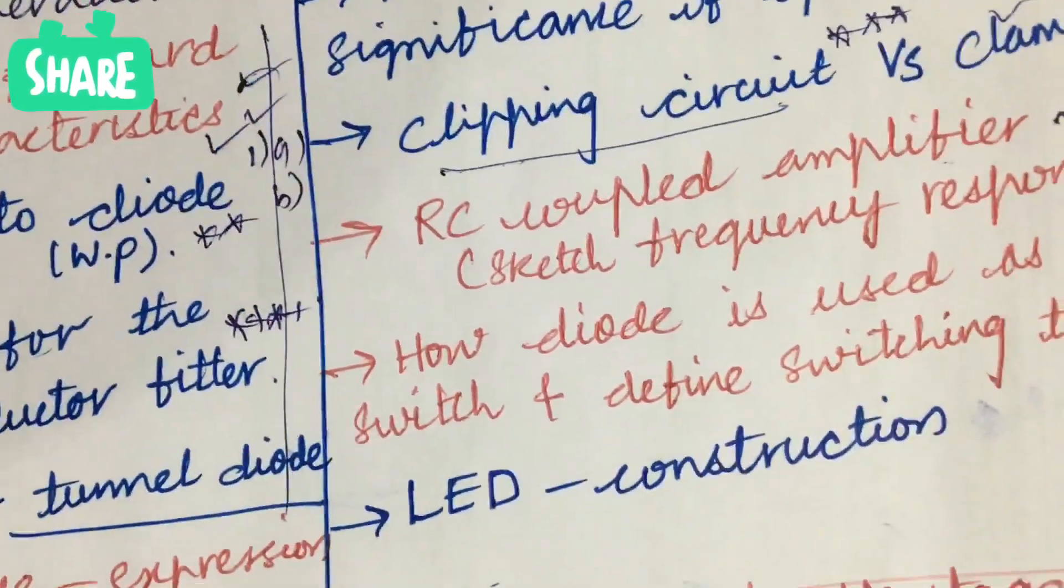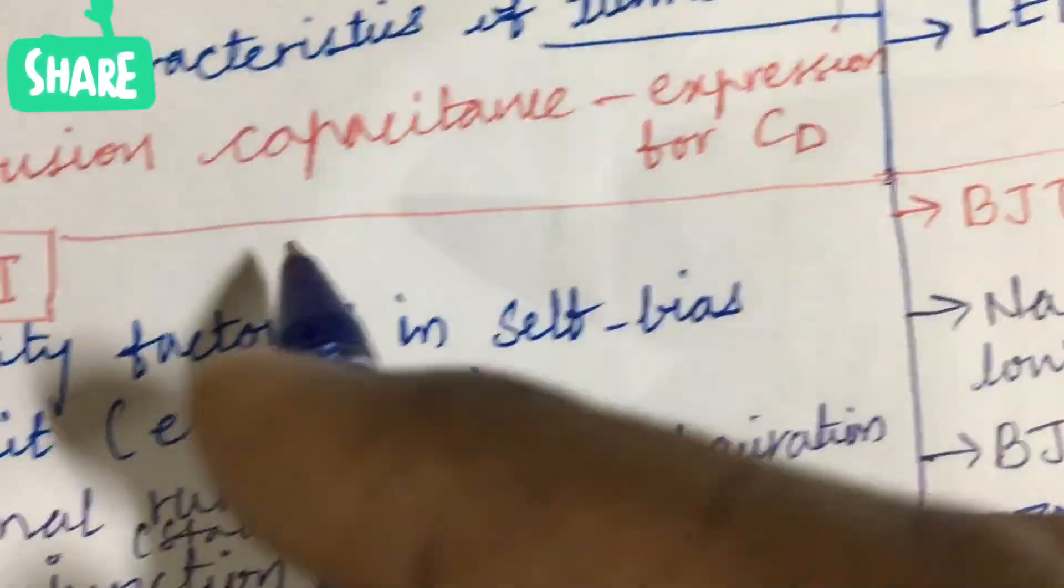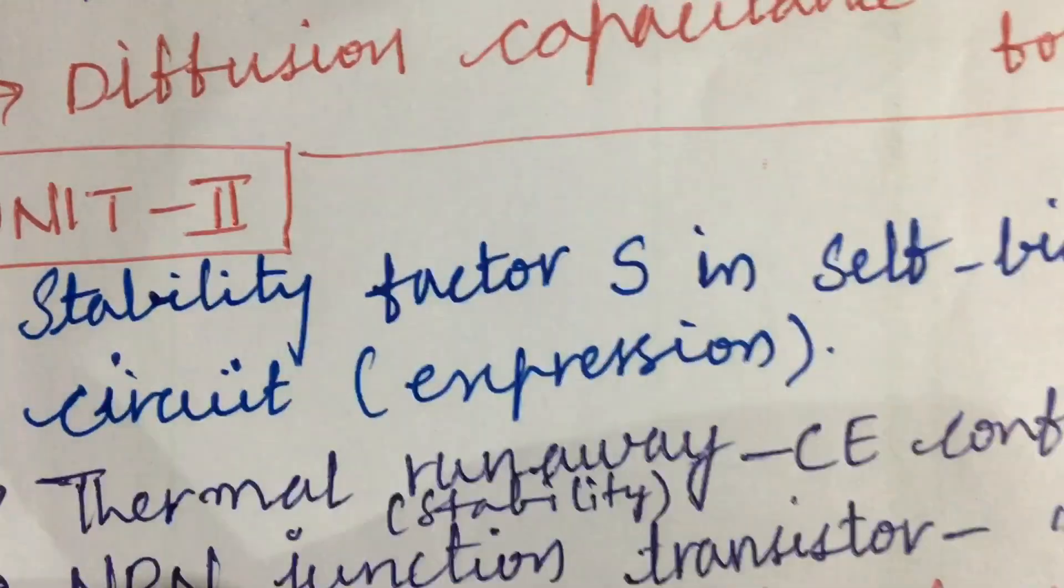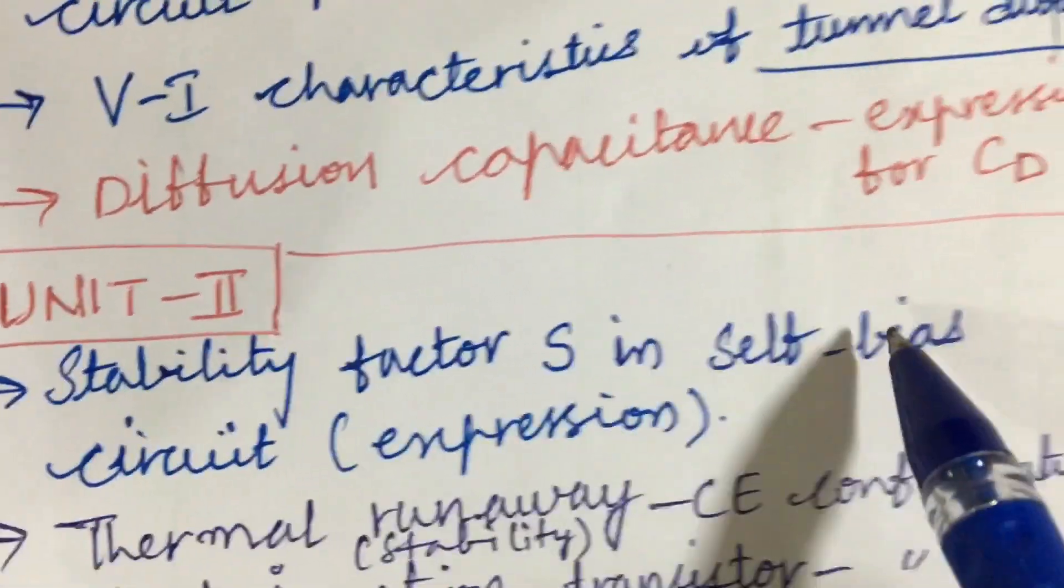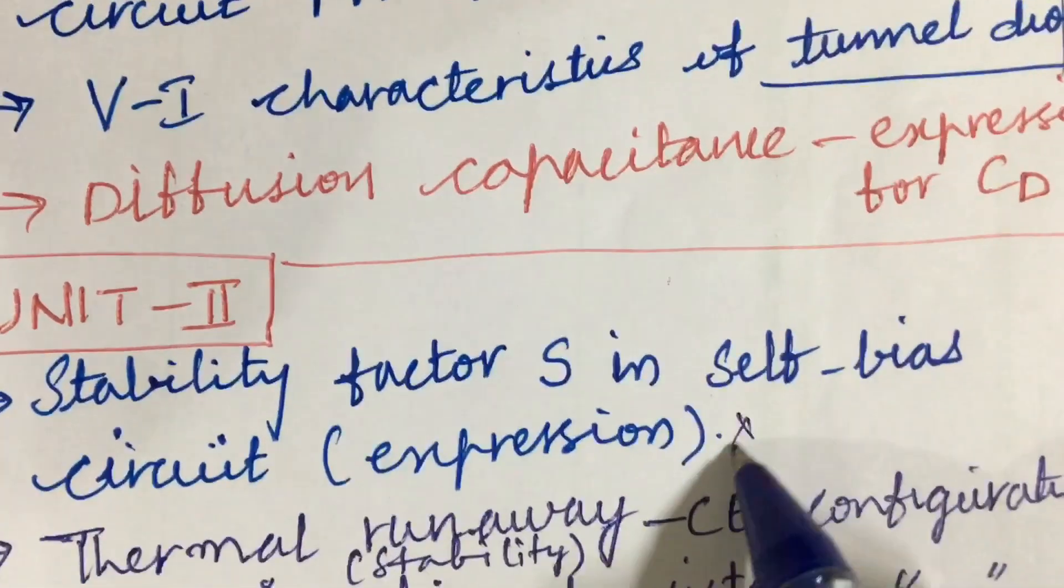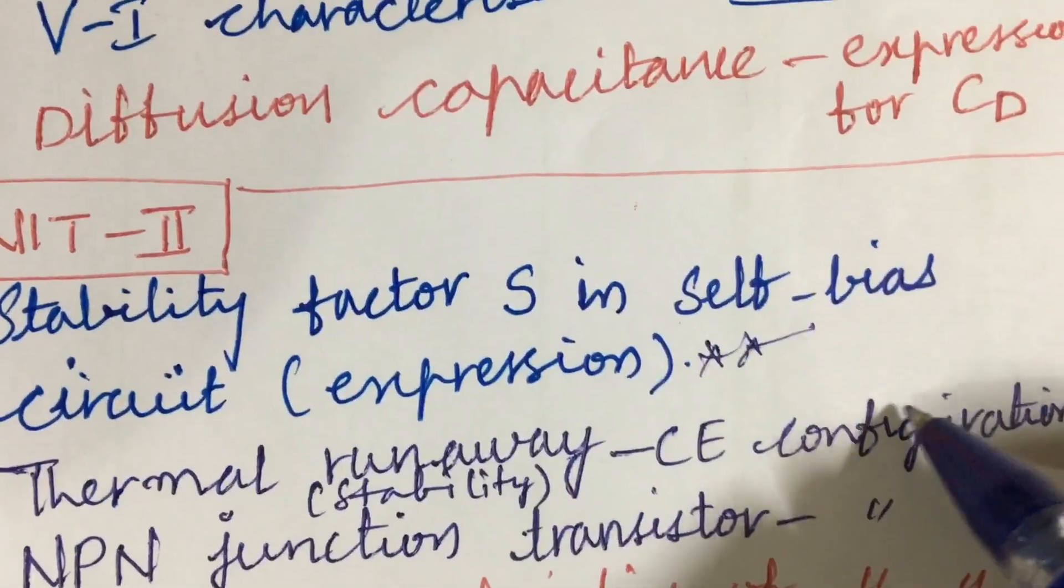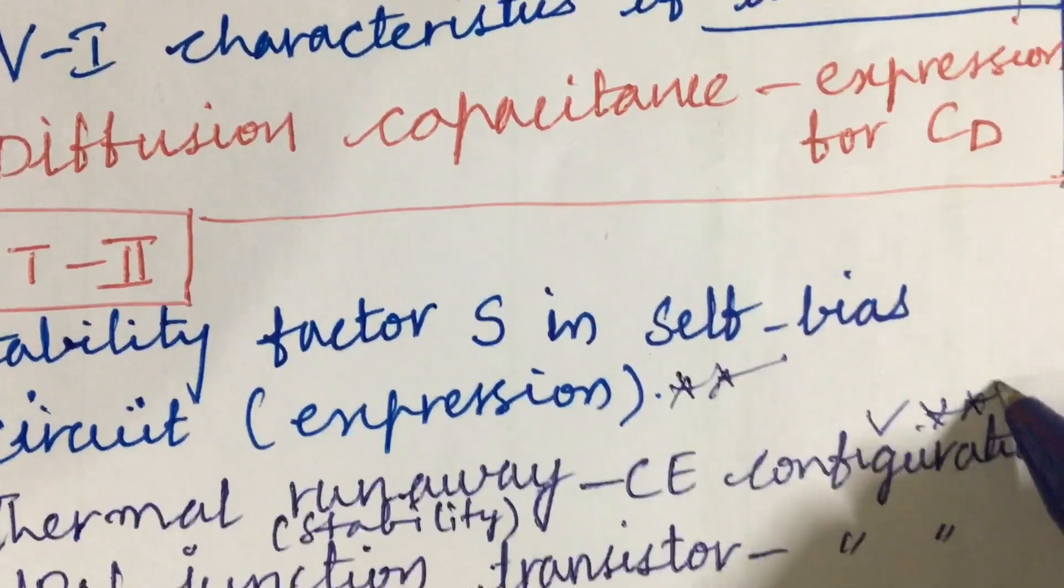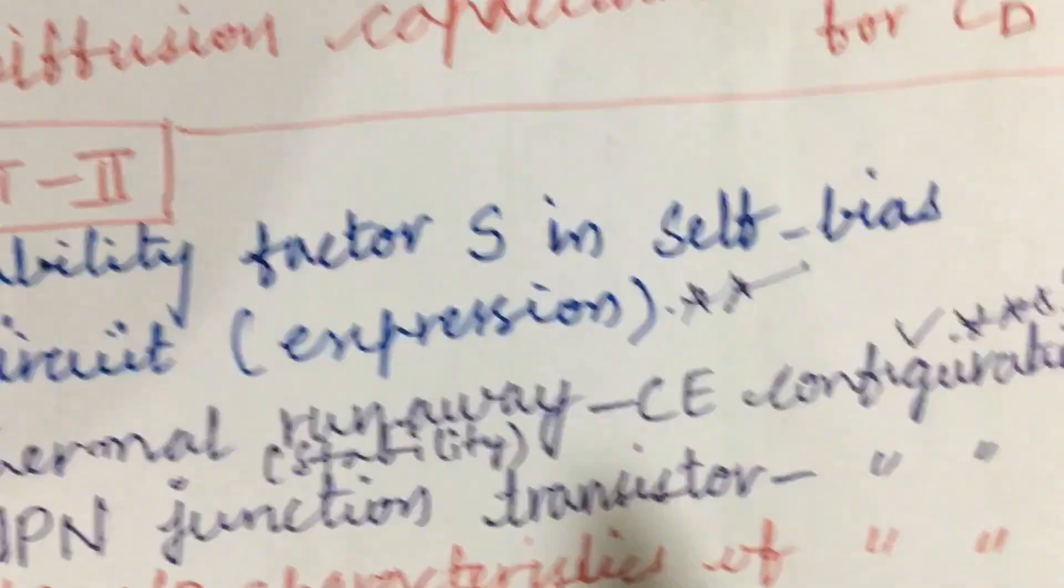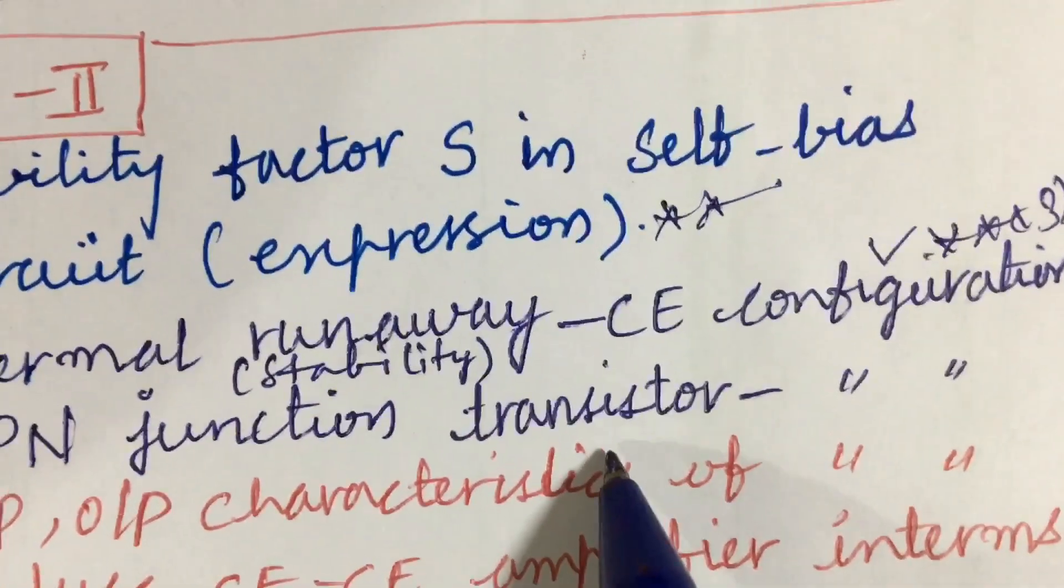Please do work out all these questions accordingly and draw diagrams only in pencil. Let's look at the third and fourth question. Stability factor S in self-bias circuit along with its expression, as well as thermal runaway and thermal stability CE configuration is a gunshot question which we can expect in 3A.